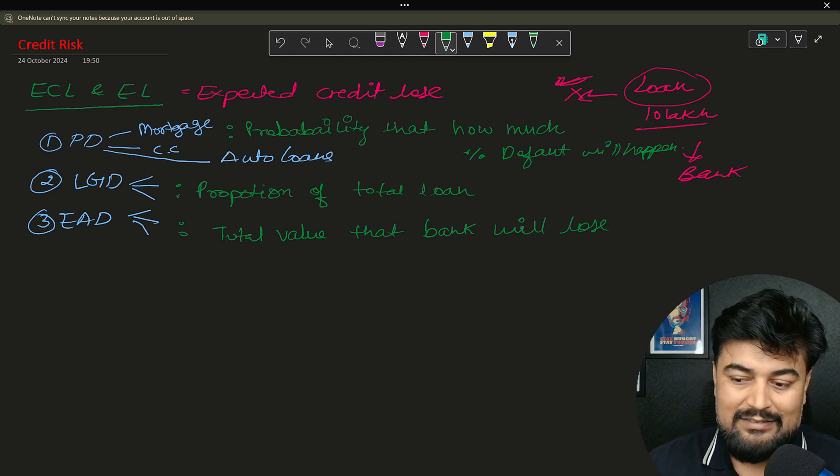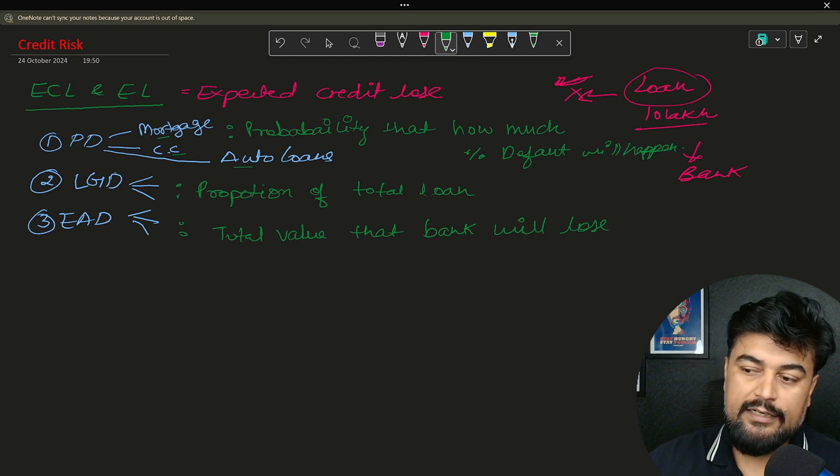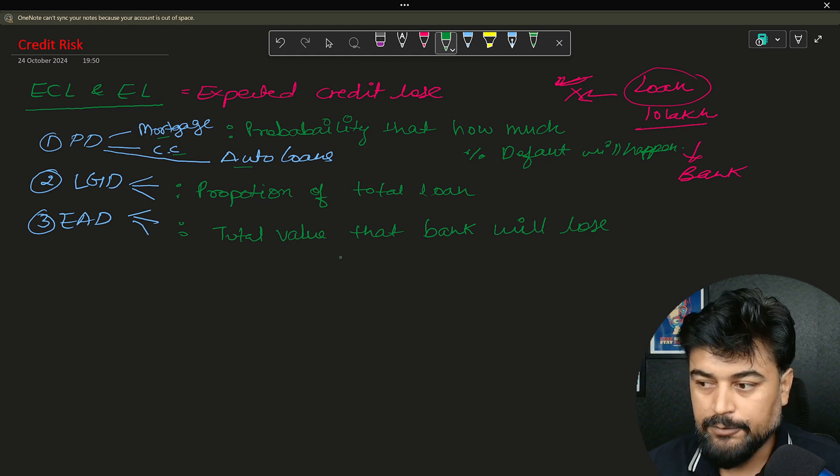Then exposure at default is the total value that bank will lose. So now it makes sense that if you make the model for any of the products like mortgage, credit card or auto loans or student loan, whatever it is, you can relate all these three terminologies.